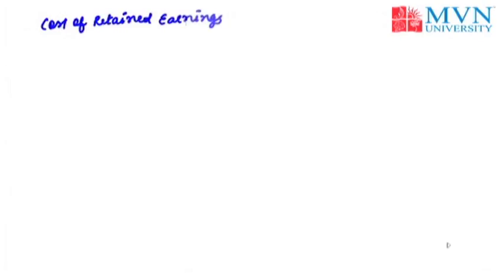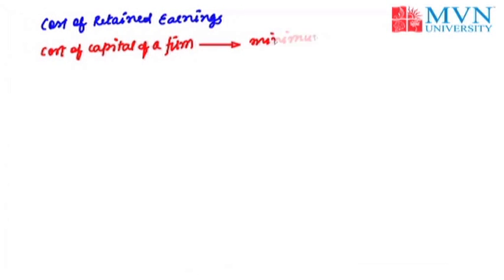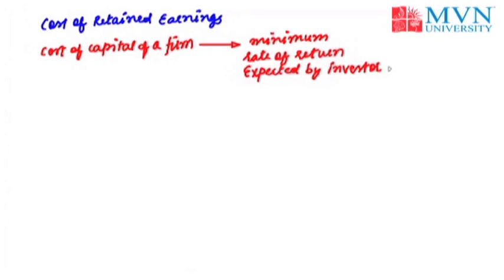Hello students, today I am going to discuss with you the cost of retained earnings. Whenever an investor invests its money in any security, there is an expectation attached with its investment. So the cost of capital of a firm is nothing but the minimum rate of return expected by its investor. The same expectation of the investor becomes the cost of capital of a firm, and fulfilling the expectation of an investor becomes the main objective of every firm.